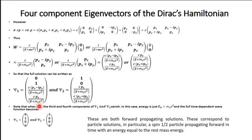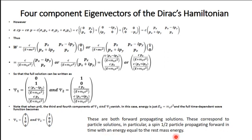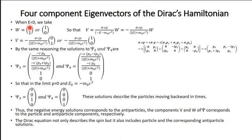When p equals zero, psi-1 reduces to (0,1,0,0) and psi-2 reduces to (1,0,0,0). These psi-1 and psi-2 are forward-propagating solutions corresponding to particle solutions — specifically a spin-half particle propagating forward in time with energy equal to the rest-mass energy m-naught c-squared.